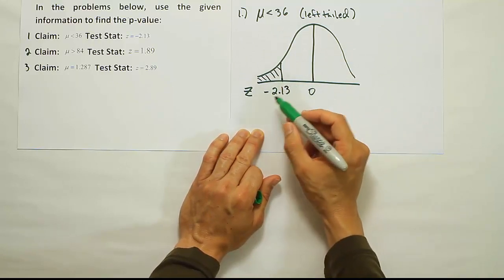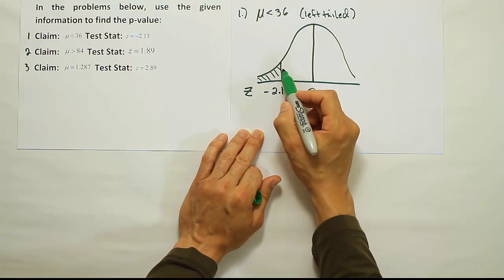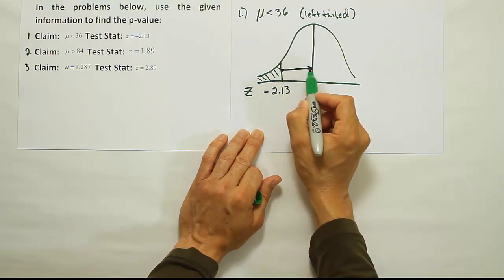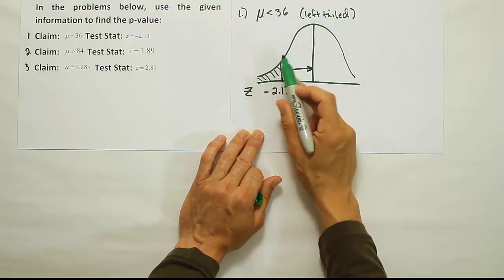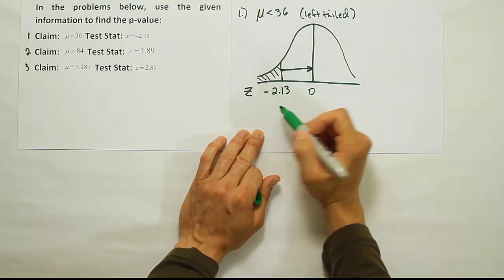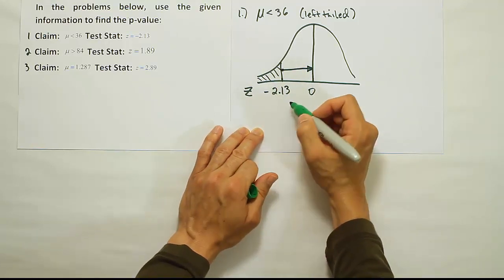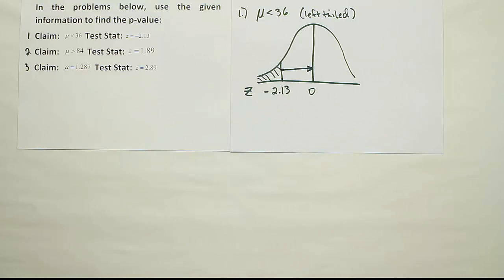To find that area, all we have to do is go to our z-table and look up negative 2.13. We'll get the area from here to here, and then we'll do 0.5 minus this area, and we'll be left with the area in the tail, which is our p-value. So what we have to do next is go to the z-table and look up minus 2.13.